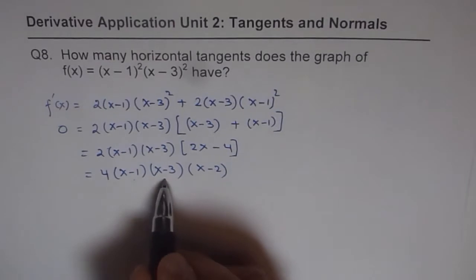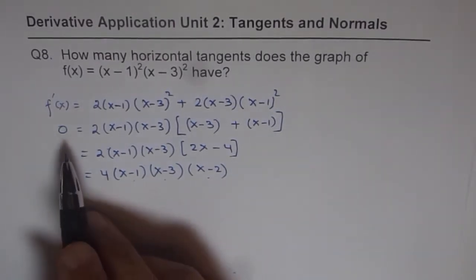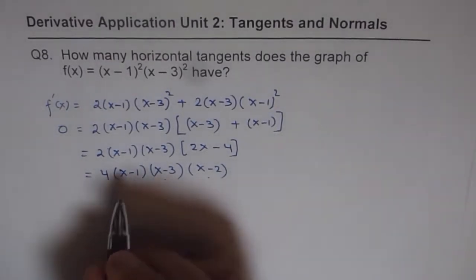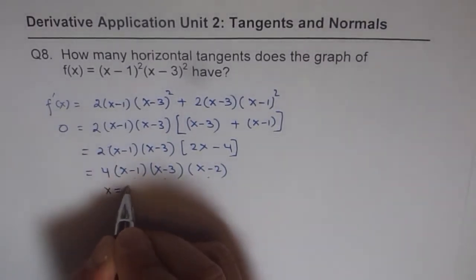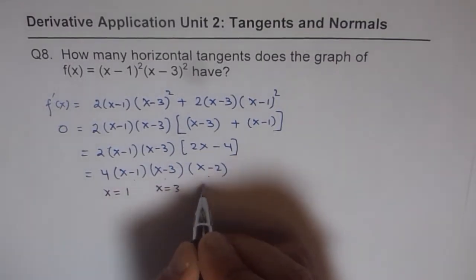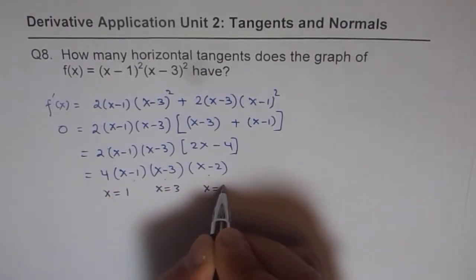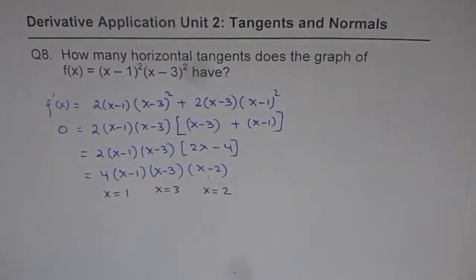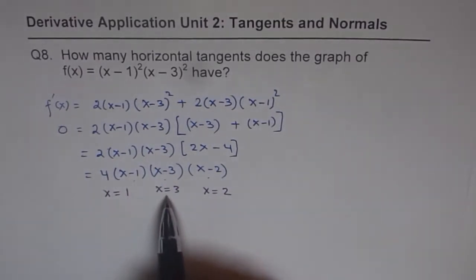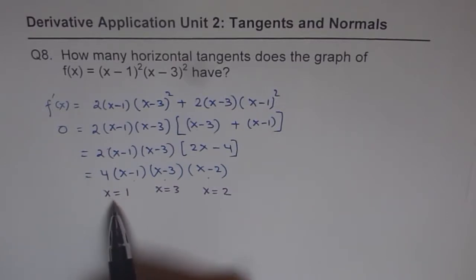Now, each factor could be 0 leading to horizontal tangent. So, the possible combinations are 3 different combinations. One we could have for x equals to 1. The other one is x equals to 3 and the third one is for x equals to 2. So, we have 3 different possibilities here for a given function. There are these 3 points, I should say, not intercepts, where the tangent to the curve is going to be 0 or horizontal.